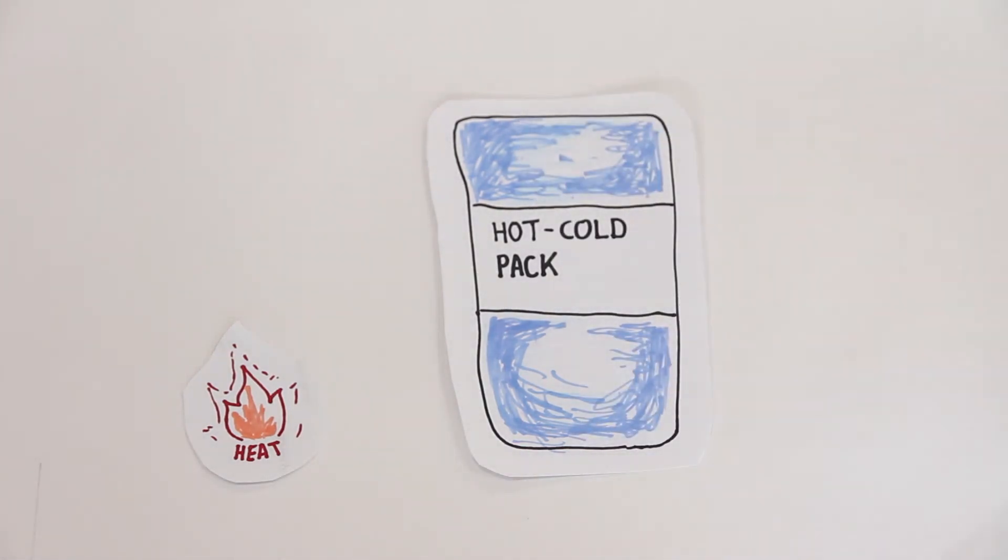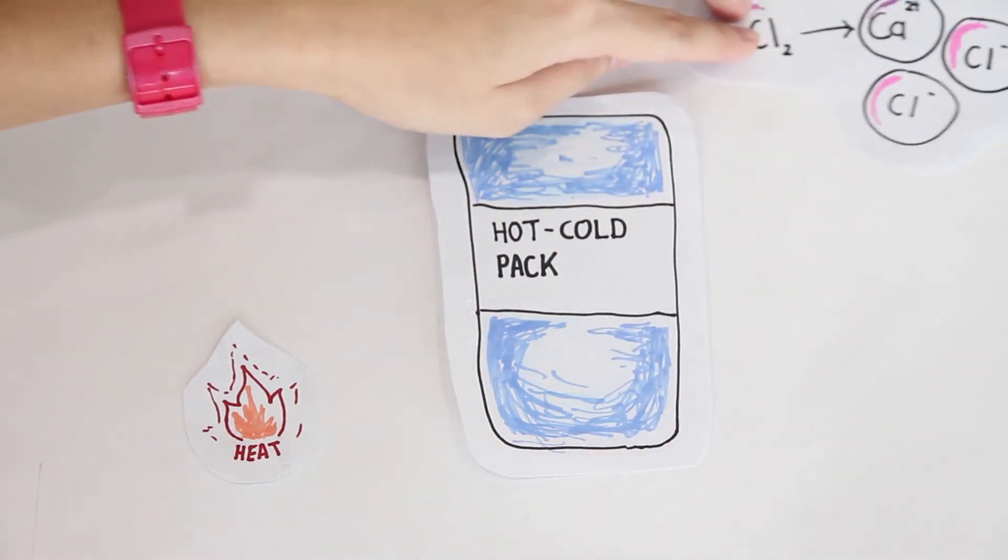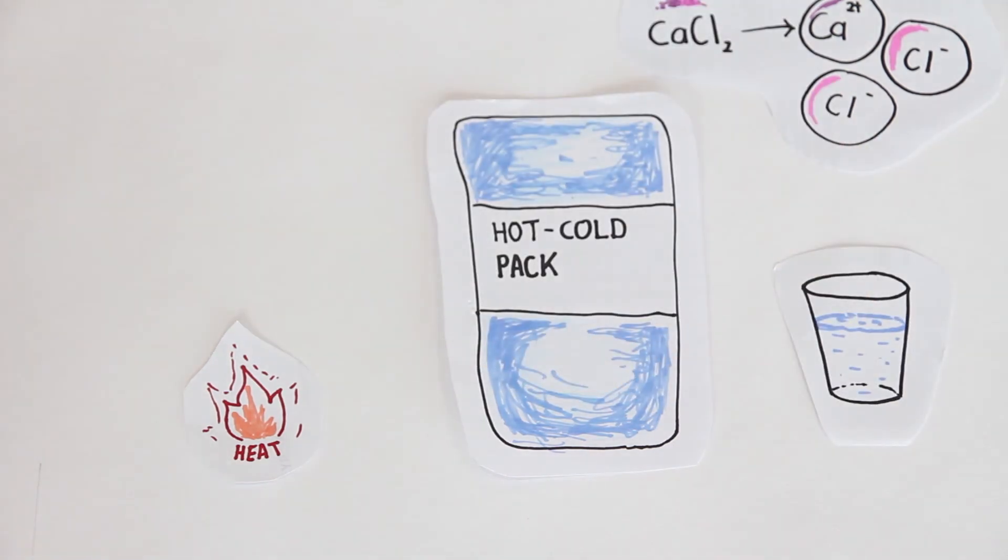If we observe closely, the salt, for example calcium chloride, dissolves in water. The salt will dissociate into calcium ion and chloride ions. The salt will dissociate until the solution is saturated where extra energy in the form of heat has to be added so that calcium and chloride ions will be forced out.